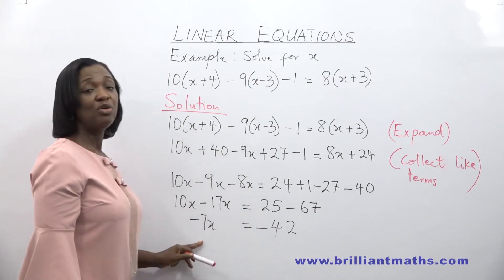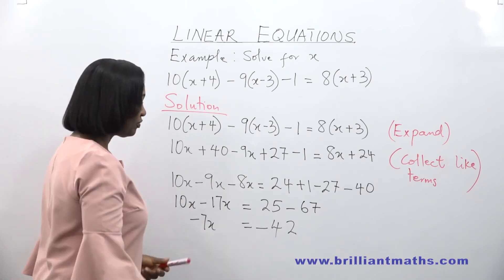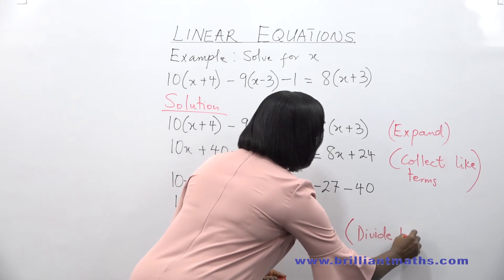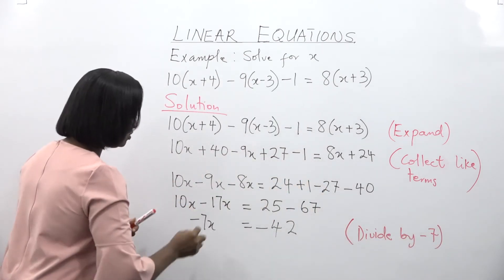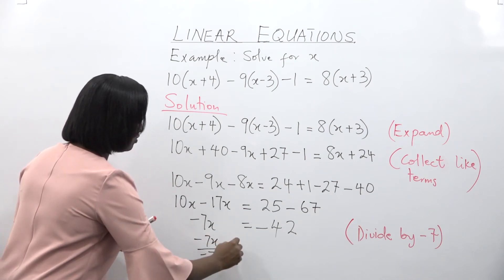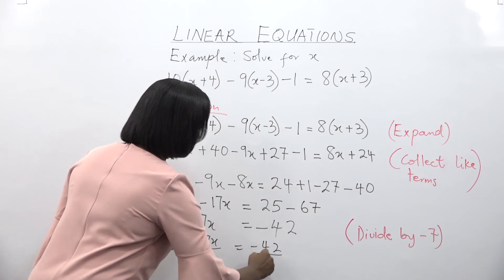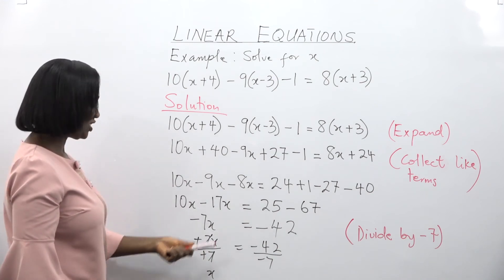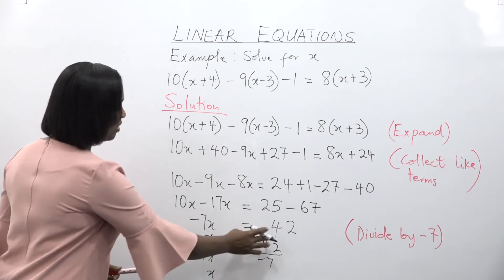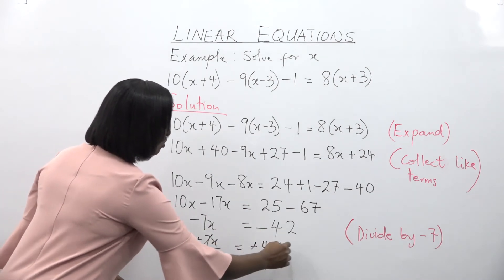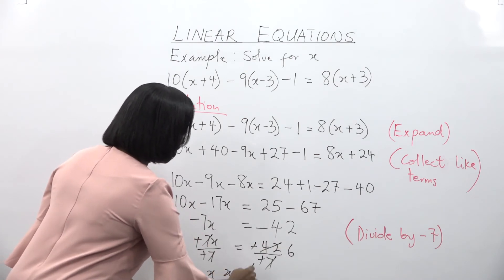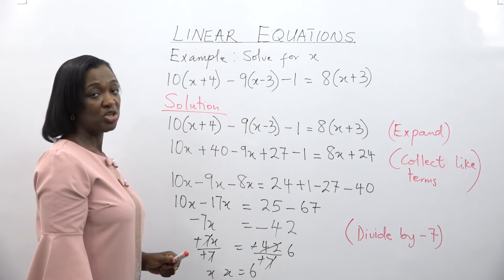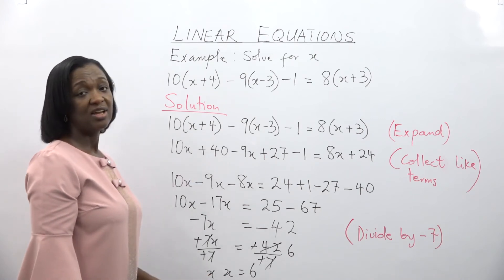The next step will be to divide through by minus 7, because we are finding a positive value of x. So divide both sides by minus 7: minus 7x over minus 7 is equal to minus 42 over minus 7. Minus 7 divided by minus 7 is 1, and 1 times x is x. Minus 42 divided by minus 7 gives us positive 6. So the value of x is 6.